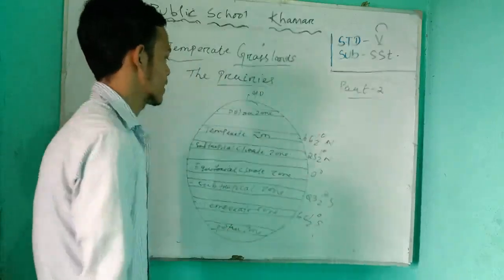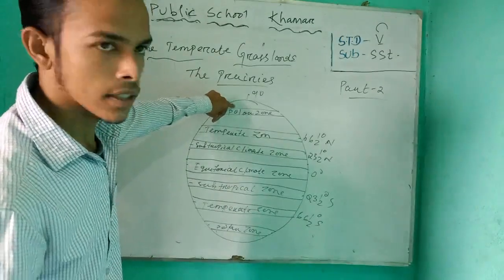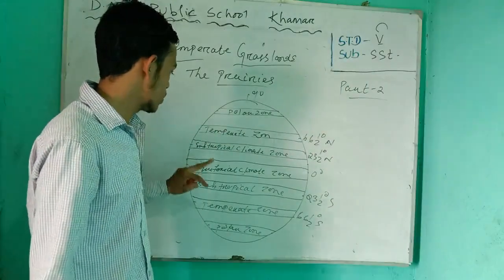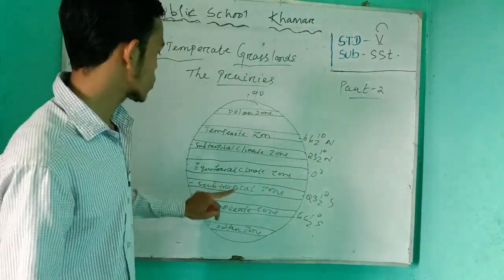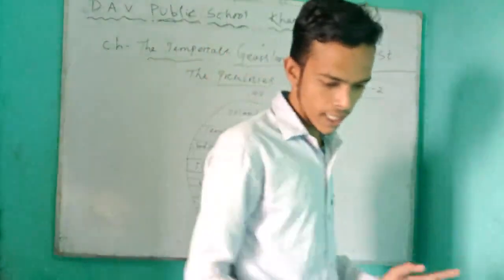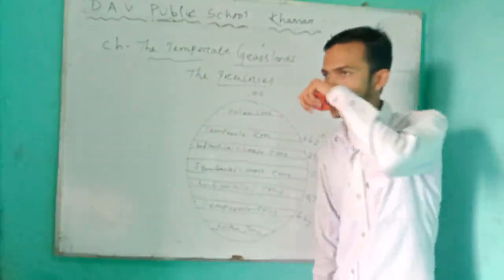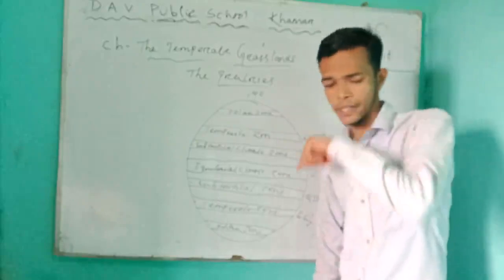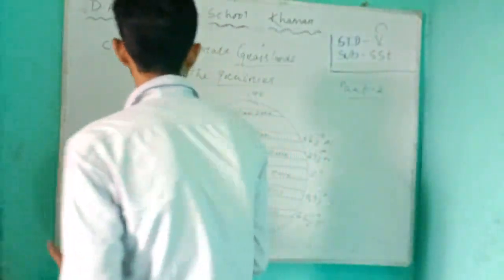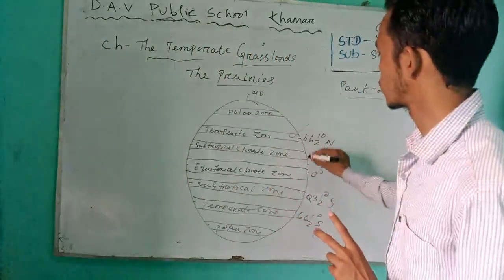So there are these types of zones: polar zone, temperate zone, subtropical zone, and equatorial zone. The chapter is about temperate grassland. The grasslands are located mostly in the temperate zone.